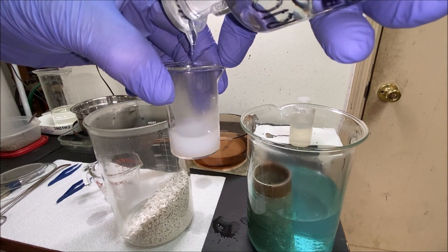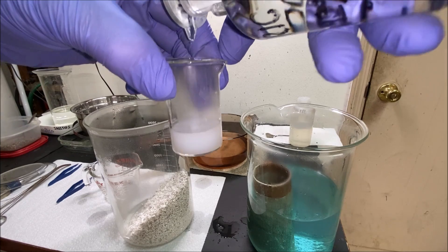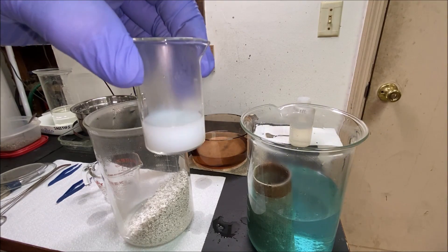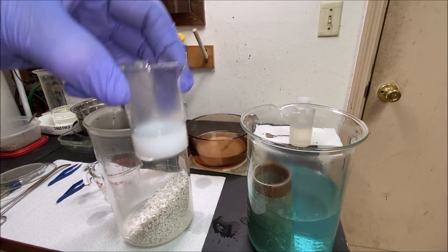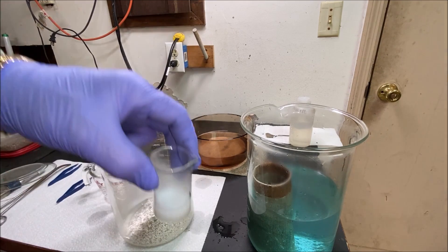If there's any silver nitrate left in here, it'll turn cloudy from silver chloride as I add the hydrochloric acid. And there you can see it still has plenty of silver nitrate left on these crystals, so we need to keep rinsing them.